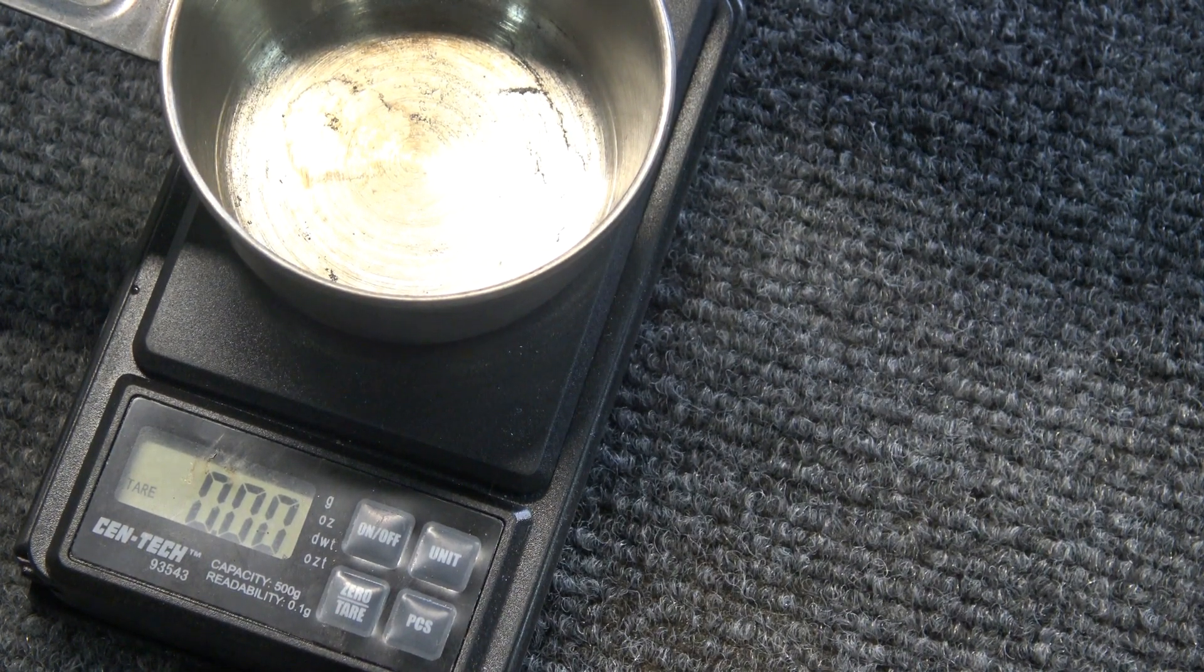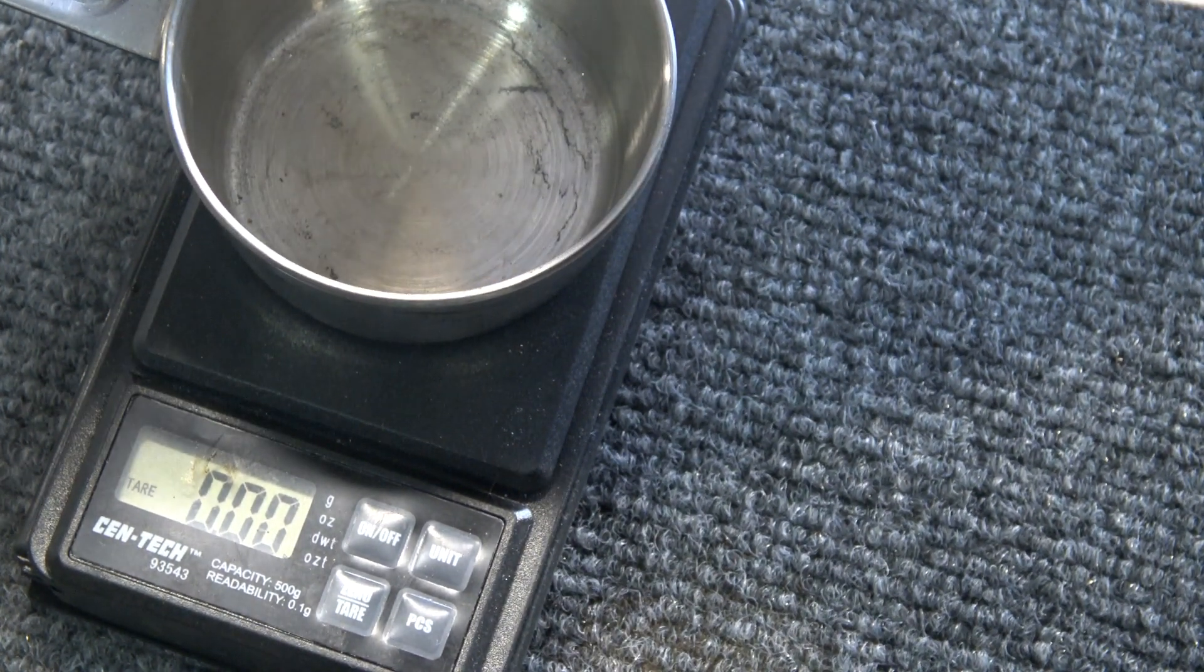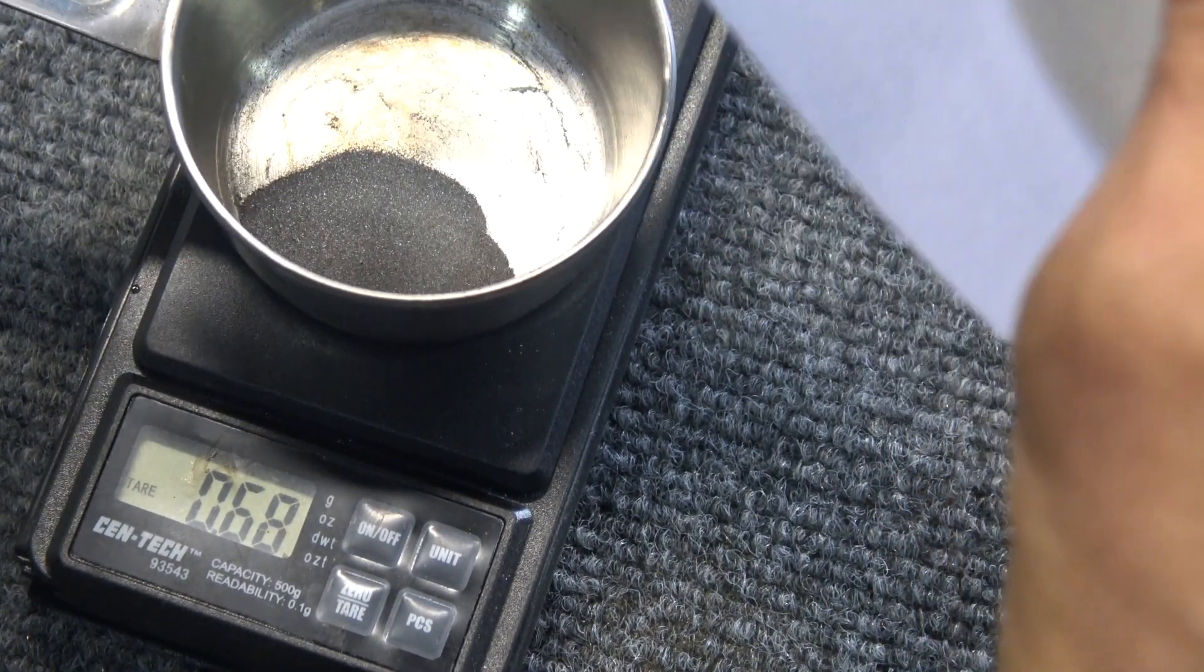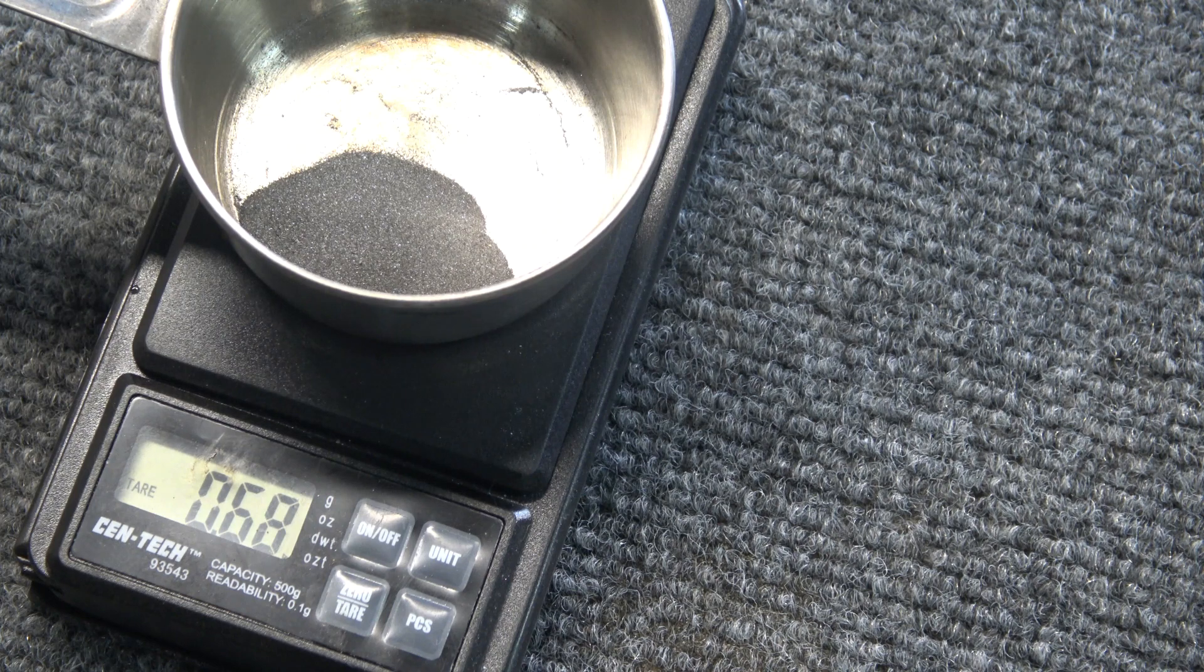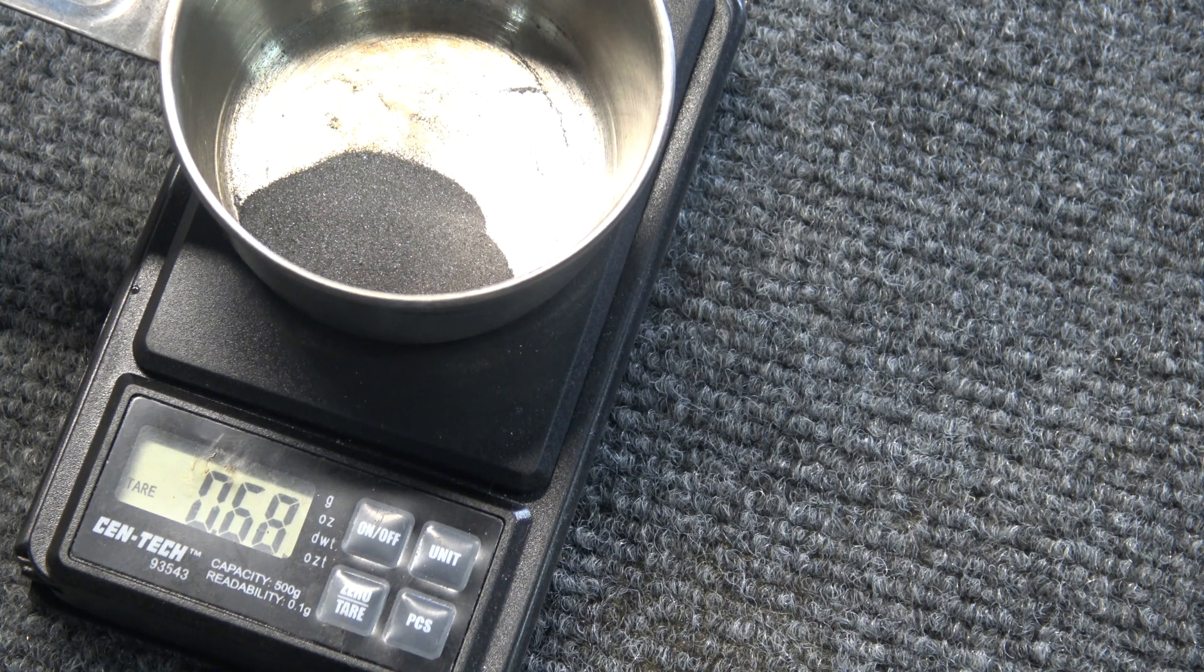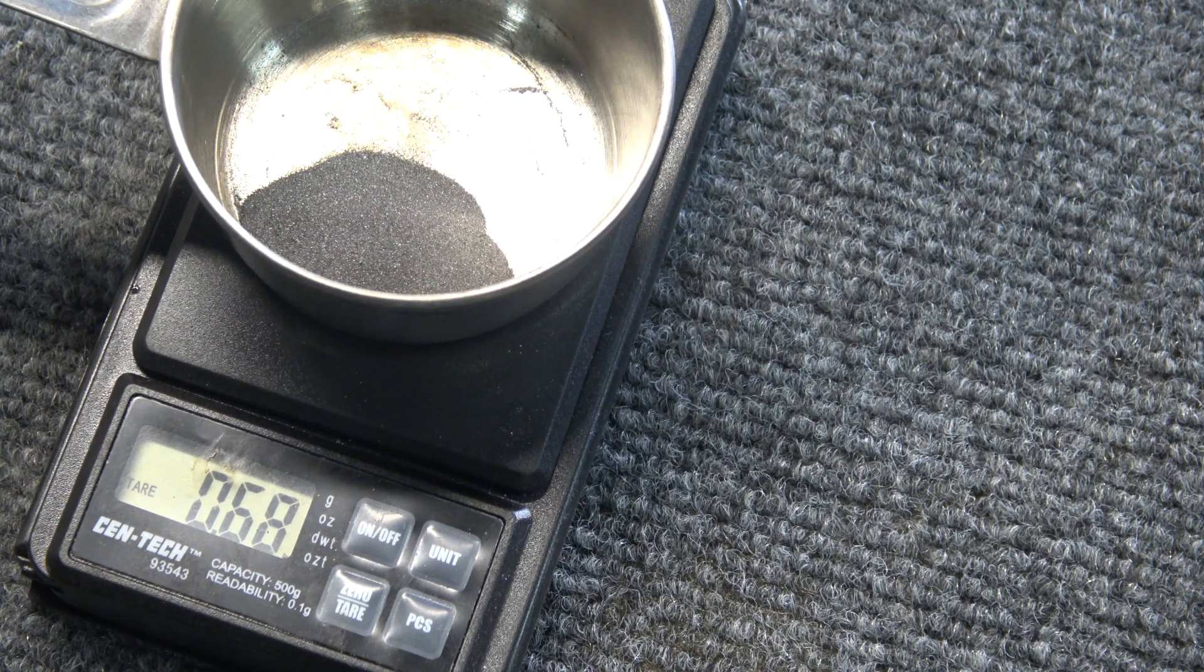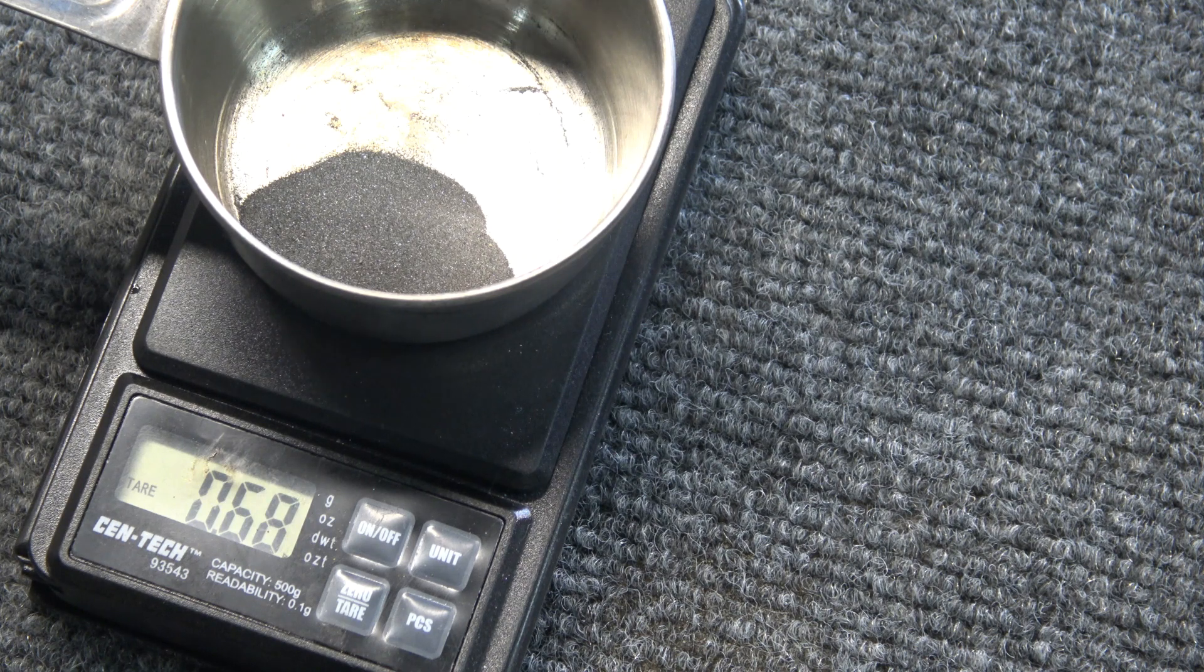Now remember we started with one ounce, so any number you see is actually going to be a percentage. So let's see what we got. 68% recovery, 300 to 400 mesh tungsten out of three pounds of crushed black sand hematite ore. I would say that is a pretty good rate of recovery for 300 to 400 mesh. So well, there you have it.